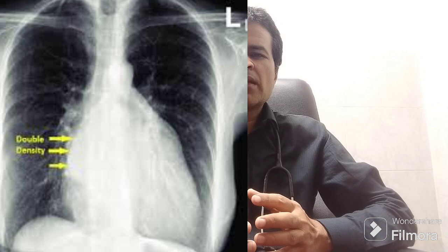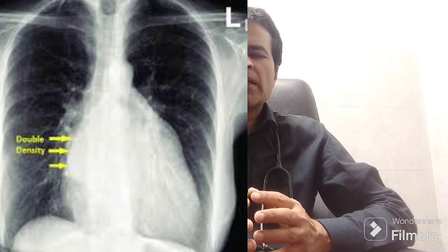On inspection, there are visible cardiac pulsations in the apical area and the parasternal area. On palpation, there is a tapping apex beat and it is not displaced. There is a parasternal heave and there is also a thrill in the parasternal area.